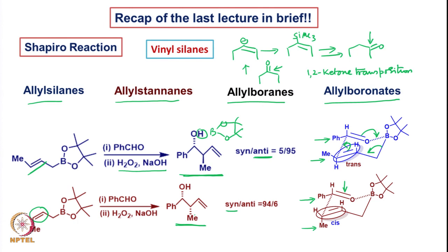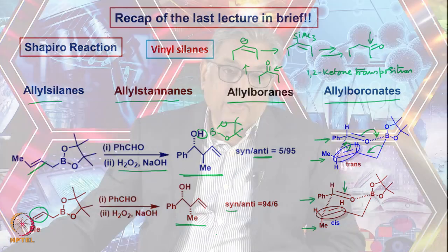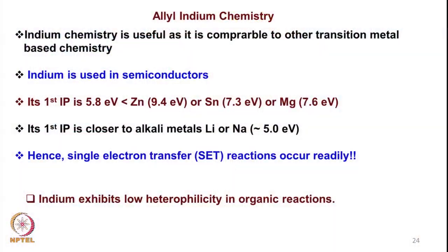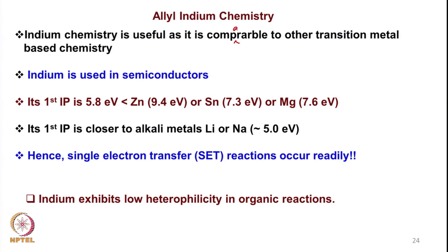So this is what we did. We will now look in a bit more detail about allyl silane, allyl tin, allyl boranes, etc., a bit later. But first, we would also like to look at what is an allyl indium. Indium is one of the very important metals and has been utilized in organic synthesis quite well. Indium chemistry is useful as it is comparable to other transition metal based chemistry.